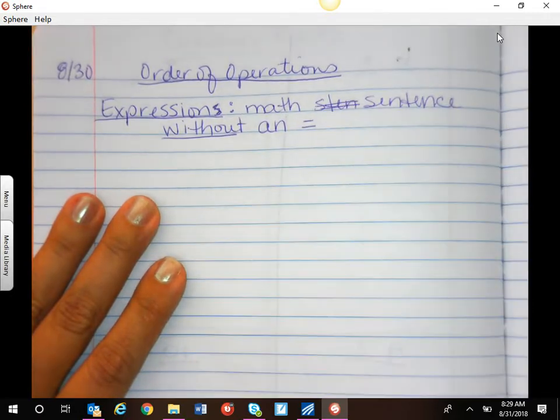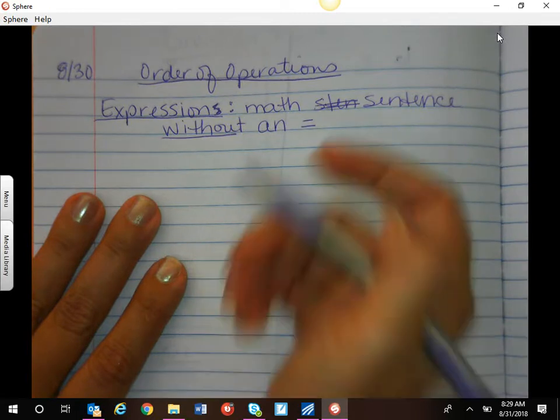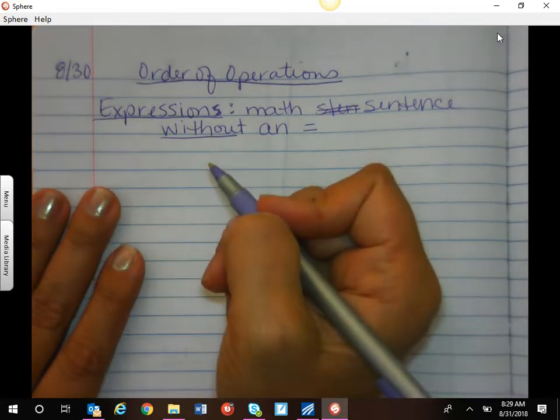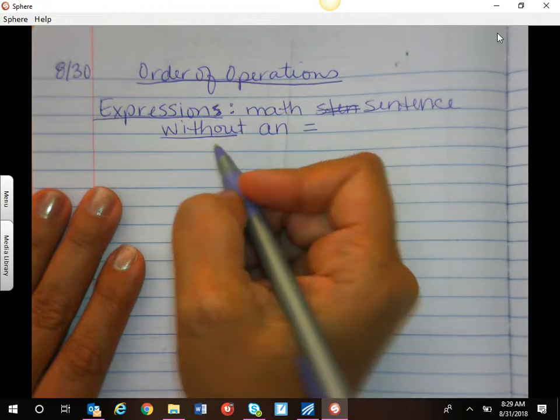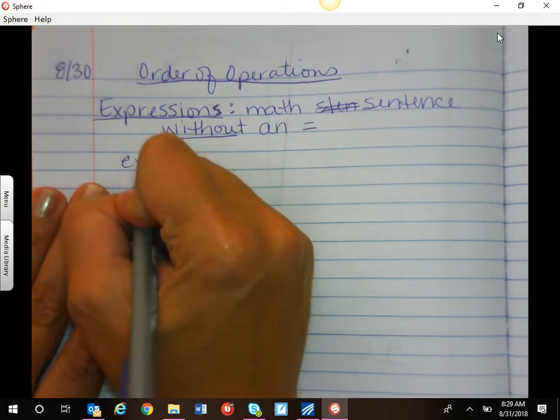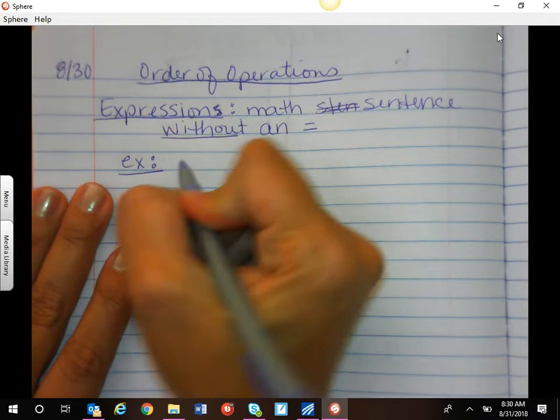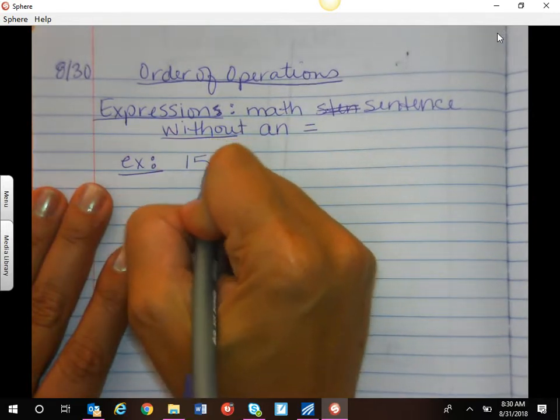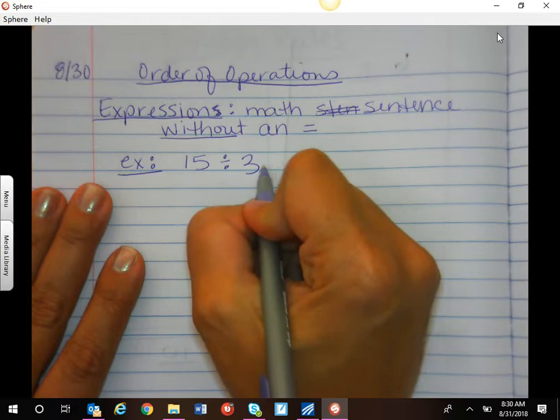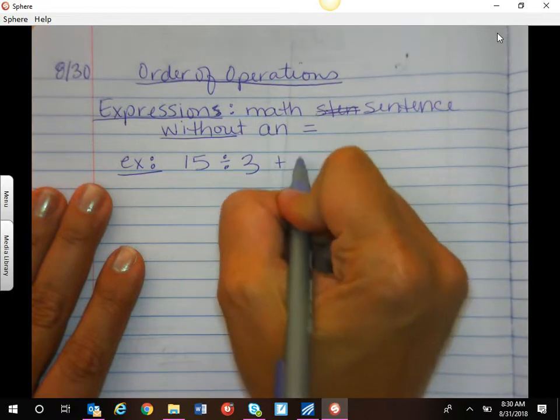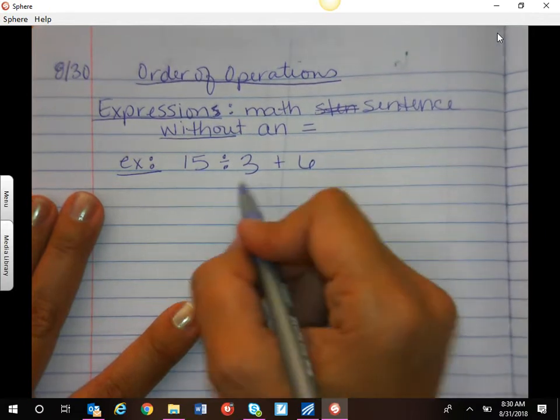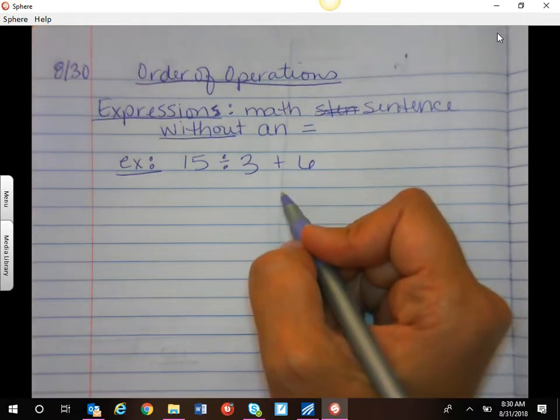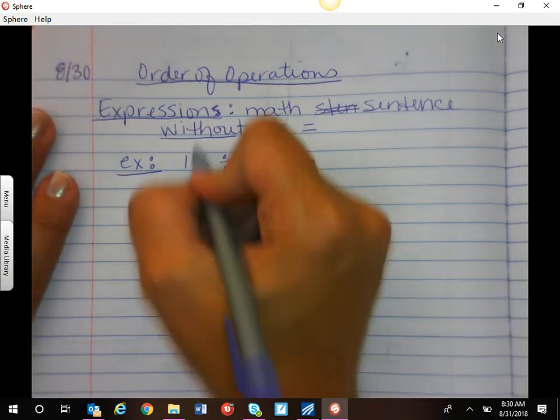So all of the expressions that we've been working with this week to simplify and to solve and all of our exponent expressions. So here is an example of an expression. If I said 15 divided by 3 plus 6, this is an expression. Now it may tell you to evaluate that, so then you would go ahead and solve it out. But because there is no equal sign, this is what we call an expression.